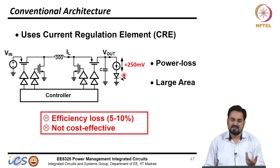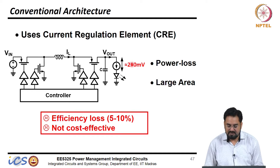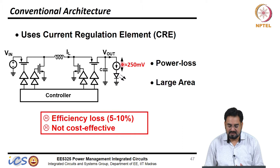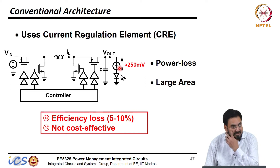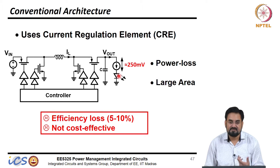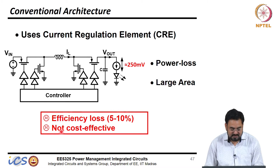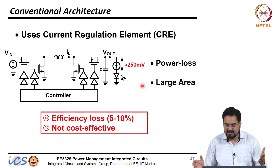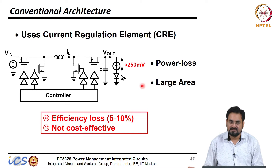You can easily use 5-volt devices here, so there is no issue in using a high-side current source. But the problem is we need some dropout voltage for this current source and there will be power loss. This current source has to supply as high as 1 amp maximum, so obviously the device size will be much larger. We have some efficiency loss here which could be 5 to 10 percent, and it is not very cost-effective because the die size is more, and your cost is always measured with the die size.